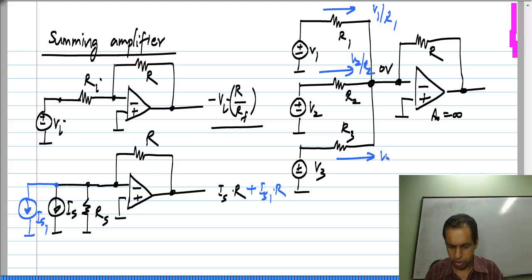and V 3 by R 3 flows over there, and all these currents have to go into the feedback resistor R.